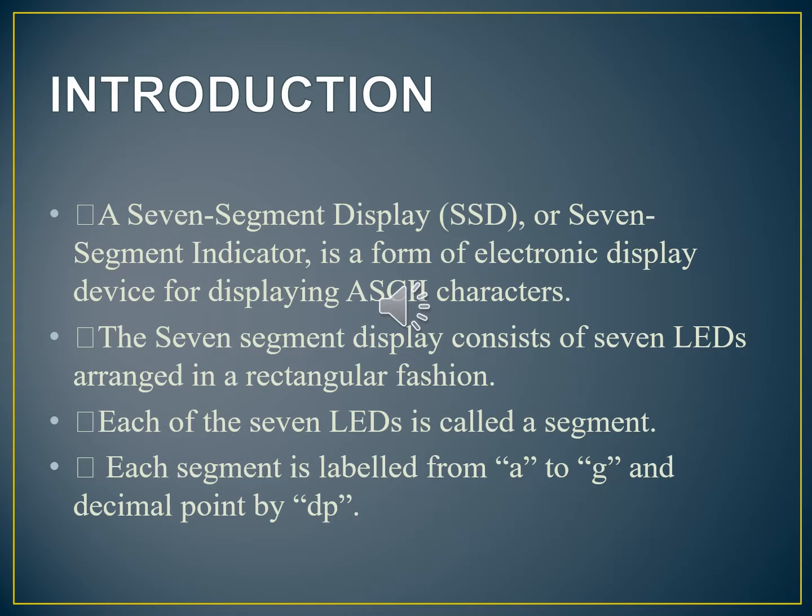So what is seven segment display? A seven segment display is an electronic device used for displaying ASCII characters. It consists of seven LEDs arranged in a rectangular fashion. Each of the seven LEDs is called a segment. Each segment is labeled from A to G and decimal point by DP.